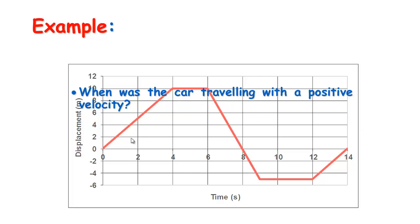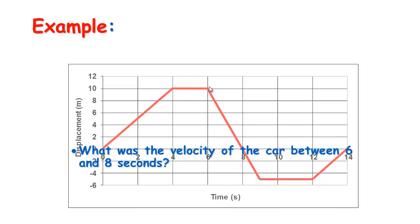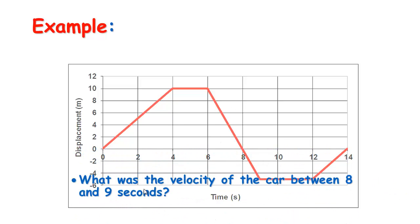When was the car travelling with a positive velocity? From 0 to 4 seconds and from 12 to 14 seconds — it has a positive gradient, therefore a positive velocity. What was the velocity between 4 and 6 seconds? Between 4 and 6 it's actually horizontal — indicating no change in displacement, so the car is stationary. Between 6 and 8 seconds: displacement of 0 minus 10 over 8 minus 6 gives negative 10 over 2, that's negative 5 metres per second. From 8 to 9 seconds the velocity is the same — the gradient hasn't changed, still minus 5 metres per second.